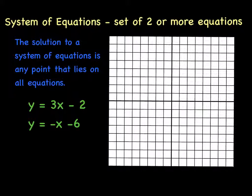Now consider this. What if you don't have just one equation? What if you have multiple equations? Well, a system of equations is a set of two or more equations. This would be a system of equations. The solution to the system of equations would be any point that lies on all equations, or in this case, both equations.